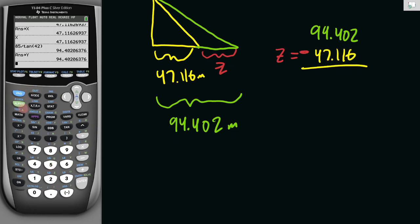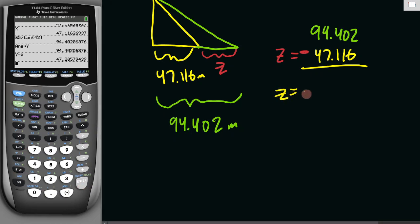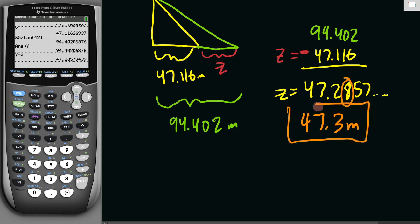Because I stored it in my calculator variables, I can just do Y minus X. My answer is Z equals 47.2857. If we go back to the original question, it asked for the nearest tenth. Because this is an eight, we round it up to 47.3 meters. And there is your final answer: 47.3 meters long.